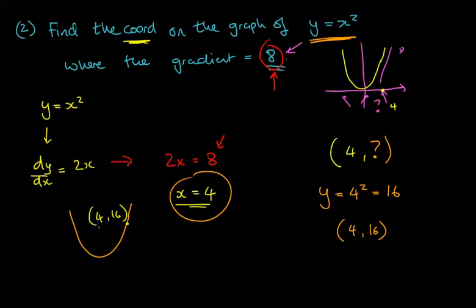So on the graph y = x², at the coordinate (4, 16), if you draw a tangent line at that particular point, the gradient is 8 steep. That's working backwards from the original problem.